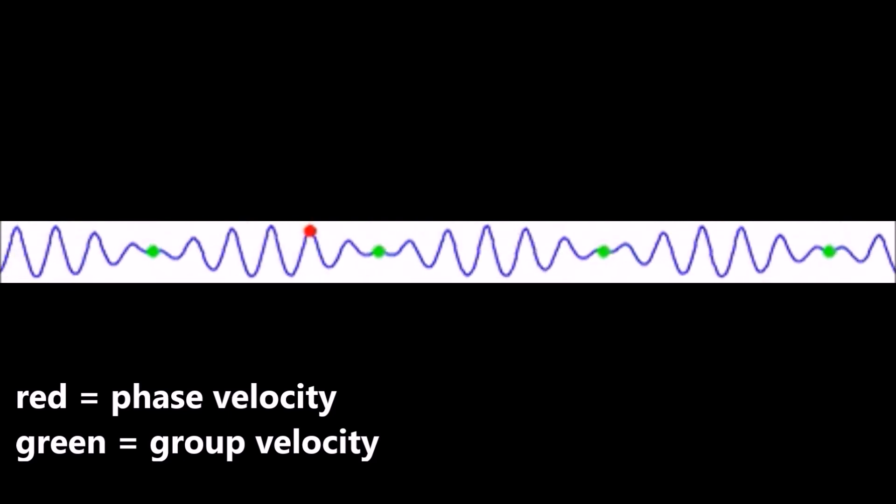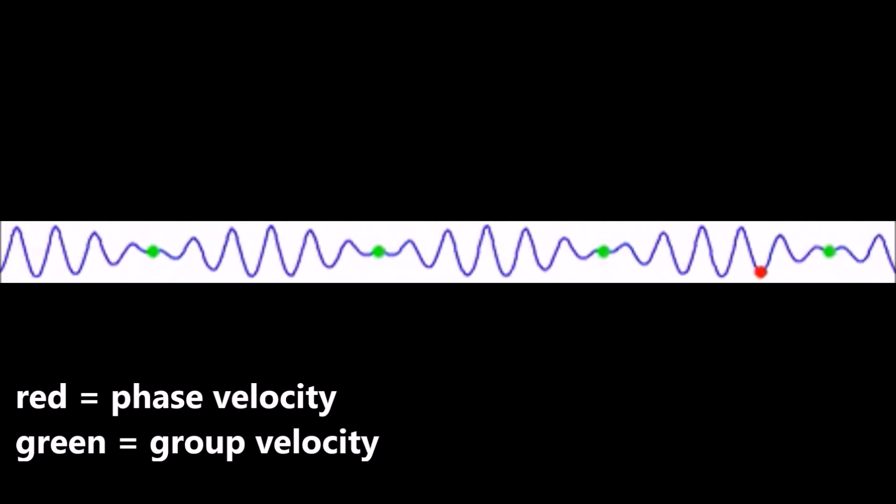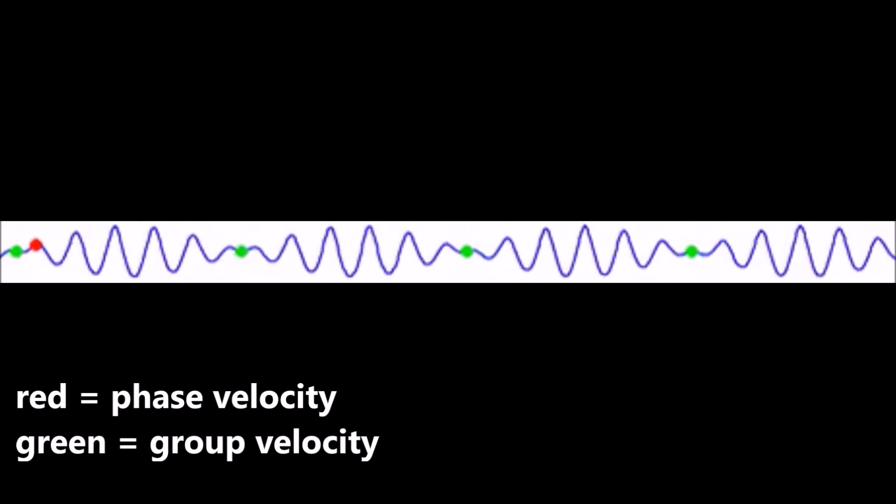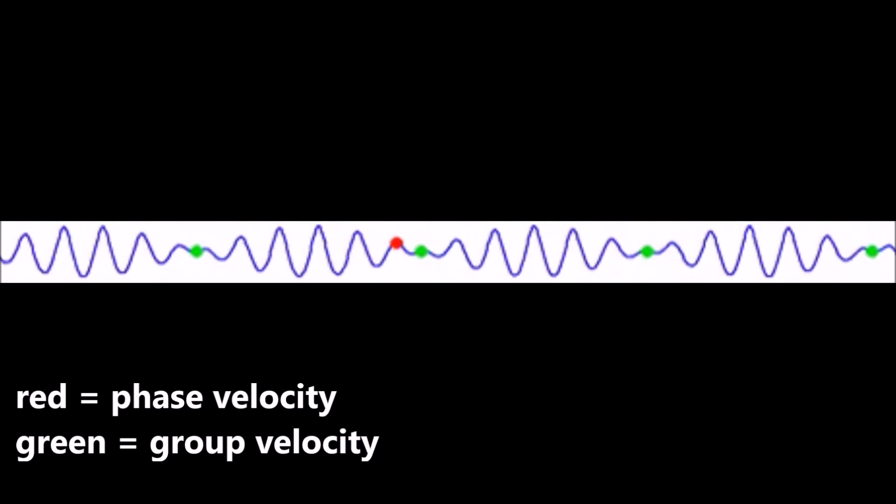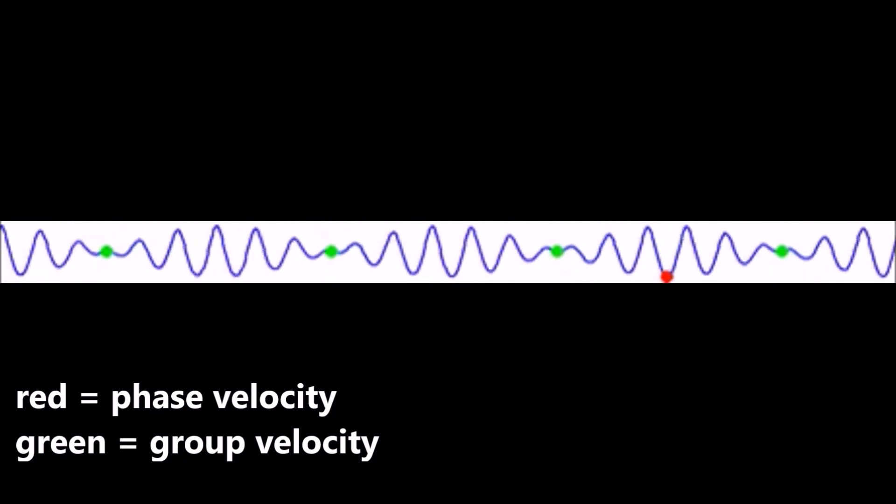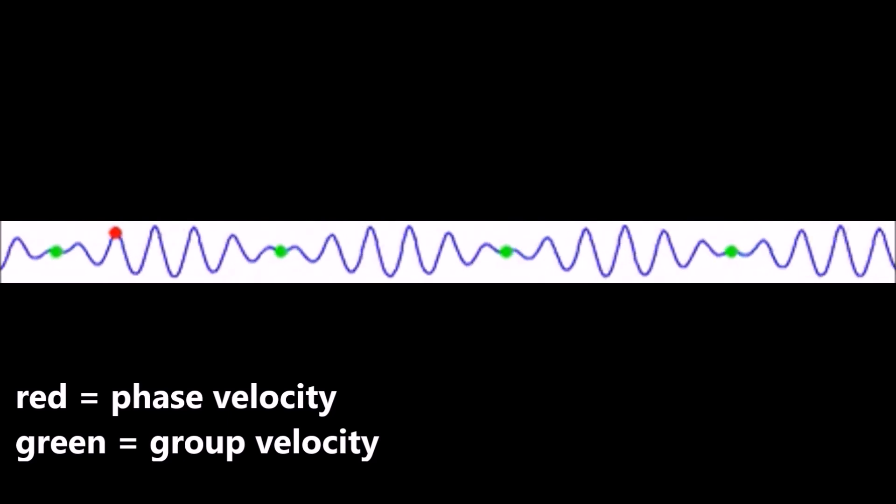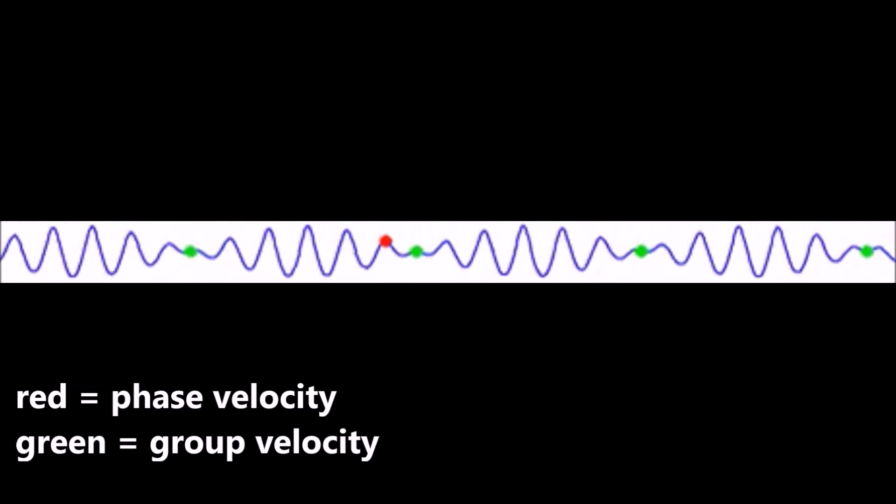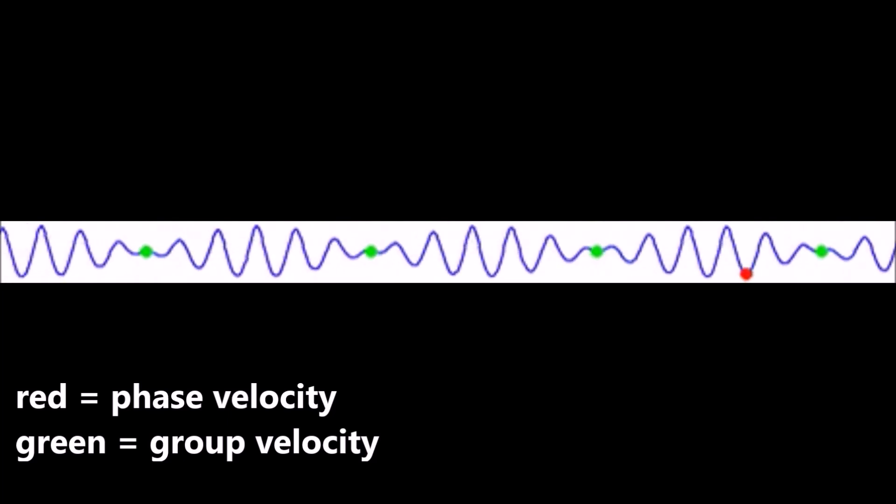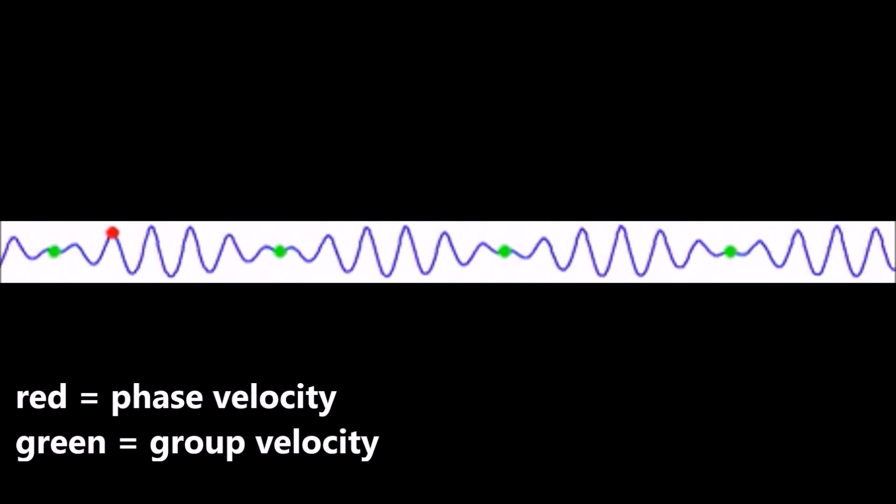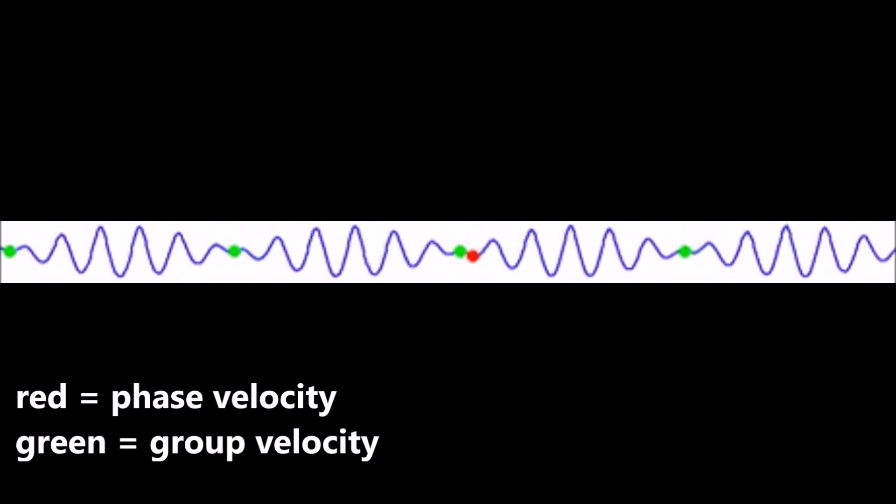Here's a wave whose phase velocity, represented by the red dot, is a lot faster than the group velocity, which is represented by the green dots. Notice how between the green dots, you have this recurring pattern of waves. This pattern determines the shape of the wave, and you can see these patterns are slowly moving from left to right. That's the group velocity. Now look at the red dot. It's moving along with the peaks and the troughs, which are moving a lot faster than the overall shape of the wave is. That's the phase velocity. In this particular wave, the group velocity and phase velocity are oriented in the same direction, but they don't have to be.